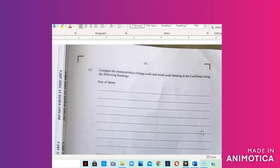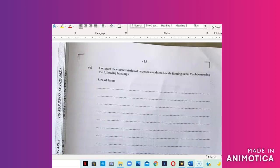Let's move on to question C. Question C asks us to compare the characteristics of large-scale and small-scale farming in the Caribbean using the following headings. Now we're going to look at the size. As it relates to small-scale farming, farming is usually done on less than 10 acres of land, while large-scale farming is usually done on more than 10 acres of land. It depends on the crop being planted as well as the owner. The size of the land may vary, so a lot of factors will basically determine the size of large-scale farming.